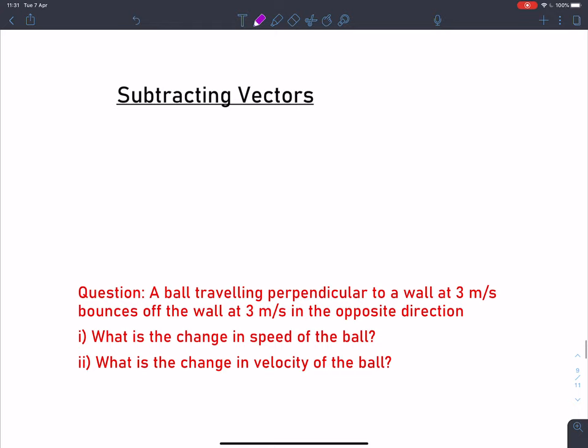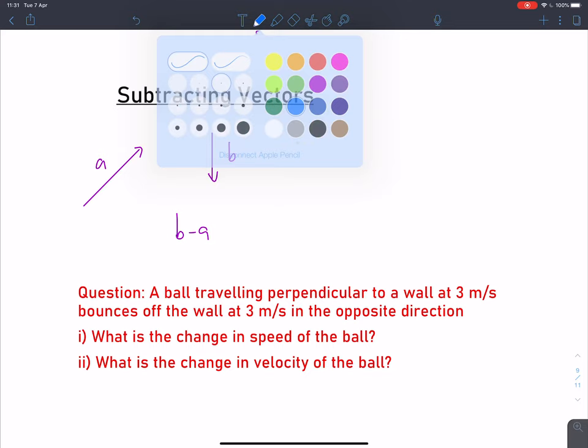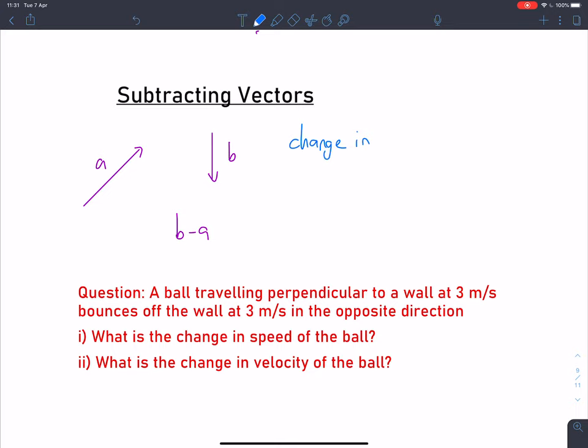With vector subtraction, if I've got two vectors, let's say a and b, and I want to find the difference between them, b minus a, what does that actually mean? Vector subtraction is really useful when we want to find the change in a vector.